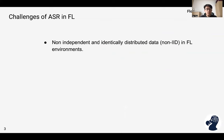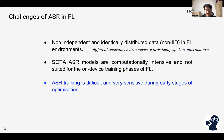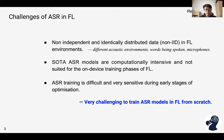First, the client distribution is non-IID in the FL environment, which is a common problem in FL. In the context of ASR, the non-IID property can represent different acoustic environments, words being spoken, and different microphones. Second, state-of-the-art ASR models are computationally intensive and not suited for on-device training in FL. Third, ASR training is difficult and very sensitive during large stages of optimization. These challenges make it almost impossible to train an ASR model in FL from scratch, and there is no existing work that successfully does that.